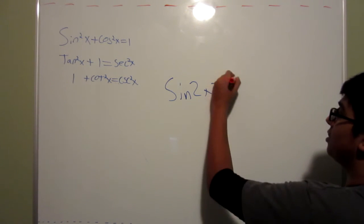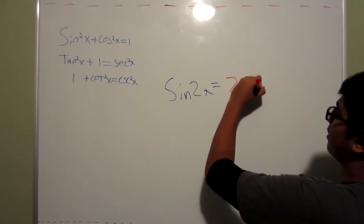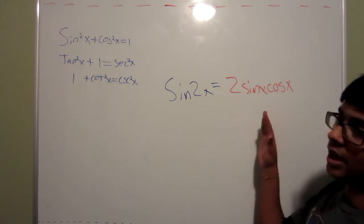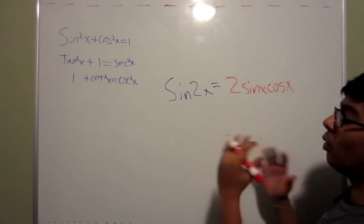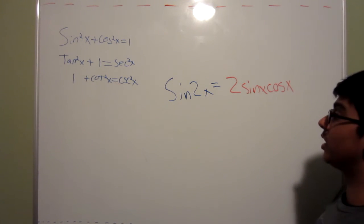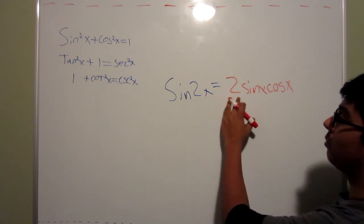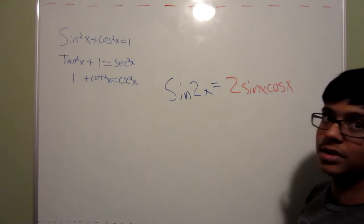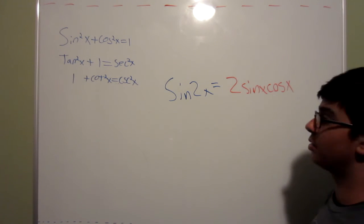So, the easier one to remember is sine 2x, since it only has one formula. And that is the 2, sine x, cosine x. This formula does not change and will always be the same, no matter what you do with it. And the easiest way to remember it is the 2 moves outside, and you add a cosine x to the formula. So, that's a simple way to remember sine 2x.